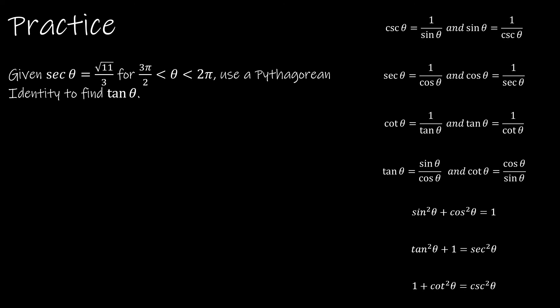So the first thing I'm going to do is I'm going to ignore this domain until we get to the end of the question. So I'm just worried right now about secant of theta is radical 11 over 3, and I'm trying to find tangent. So here I can see I have a Pythagorean identity that equates the two.